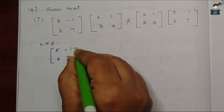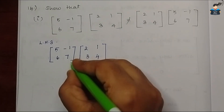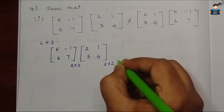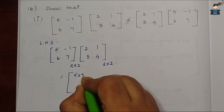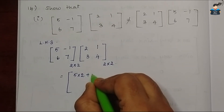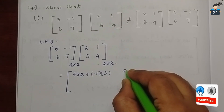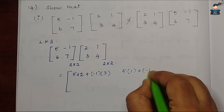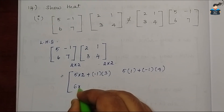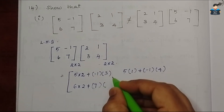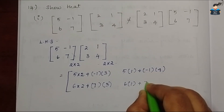LHS: the first matrix is [5, −1; 6, 7] and the second matrix is [2, 1; 3, 4]. This is a 2×2 multiplication. First row, first column: 5×2 plus (−1)×3. First row, second column: 5×1 plus (−1)×4. Second row, first column: 6×2 plus 7×3. Second row, second column: 6×1 plus 7×4.